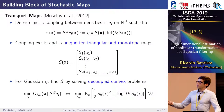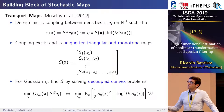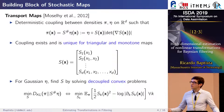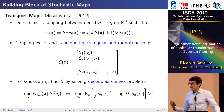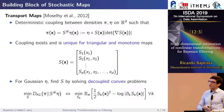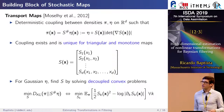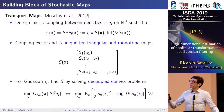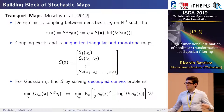The building block for deriving these transformations is measure transport. Given two densities pi and eta — where eta is often a simple reference distribution — we find a mapping S between them that characterizes pi via this transformation. If we have samples x from pi, then applying S to x yields samples distributed according to eta. We refer to this as the push-forward of pi through map S being equal to eta.